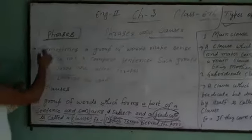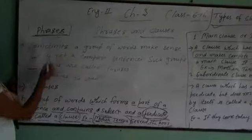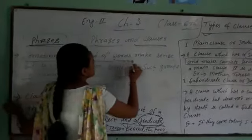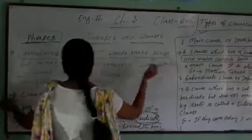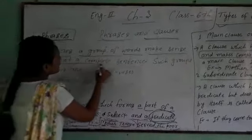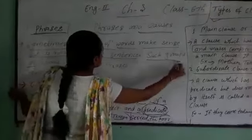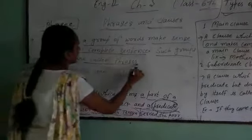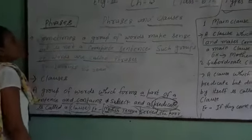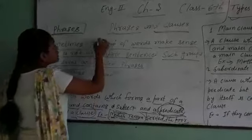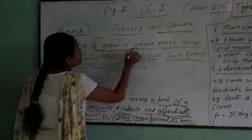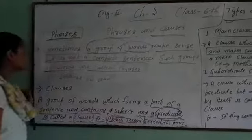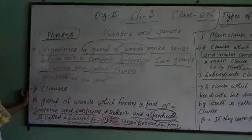Now we know about phrases. Sometimes a group of words makes a sense but it is not a complete sentence. Such groups of words are called phrases. It means it is formed by a group of words but does not make a complete sense. It is called a phrase.